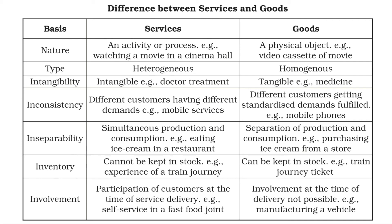Whatever goods are suitable to your requirements, that is what you purchase. In services, production and consumption are simultaneously performed. In the case of goods, production and consumption may be different — for example, a car is manufactured today but may be sold after one month. Goods can be stored and sold afterwards. In services, participation of the customer at the time of service delivery is mandatory. In the case of goods, it is not mandatory — like when a car is manufactured, your involvement is not required at that time.